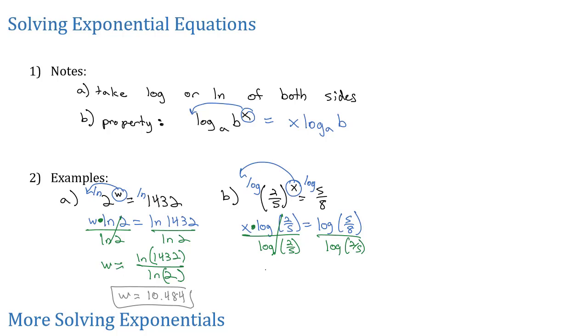That will reduce out giving us x equals the log of 5 eighths divided by the log of 2 fifths. If we put that into our calculator, making sure we close parenthesis appropriately, we get x equals 0.513 approximately.